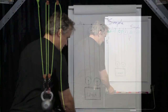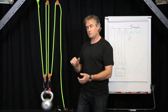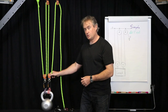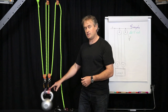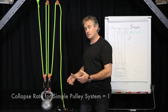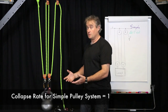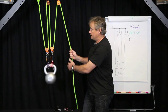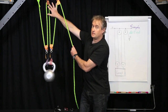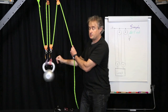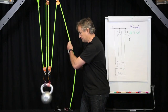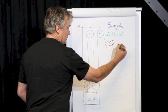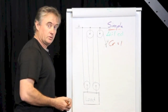Our collapse rate definition is the speed of collapse of the pulley system relative to the speed of the load. By definition, the simple mechanical advantage has all travelling pulleys moving at the same speed in the same direction as the load, which means the collapse rate on a simple pulley system must be 1. That's the case with all simple pulley systems — as we haul that load up, these two travelling pulleys are collapsing against the stationary pulleys at the same speed that the load moves. So our collapse rate must be 1. Collapse rate equals 1 for all simple pulley systems.